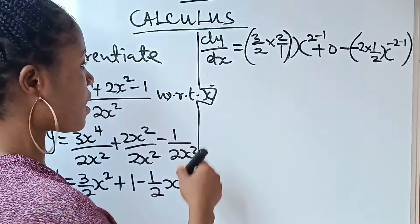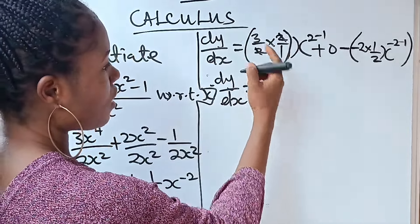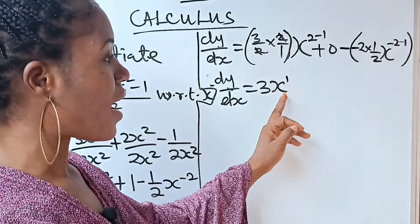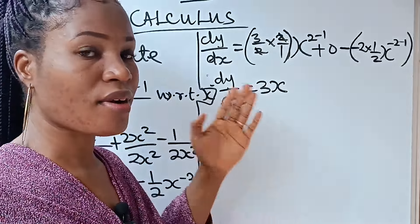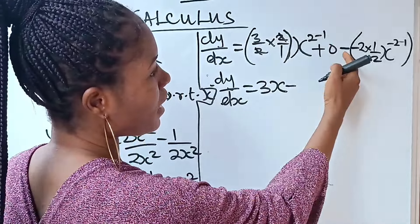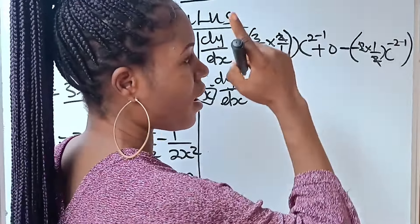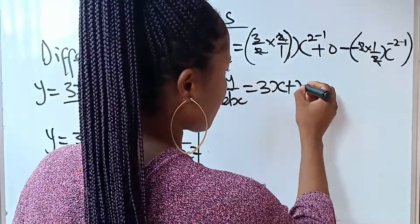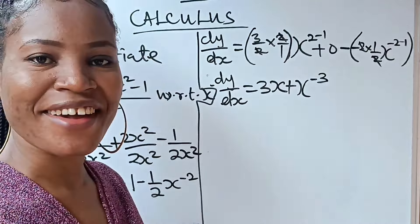We now go ahead and simplify. dy/dx equals: the 2s cancel to leave 3, and 2 minus 1 gives x to the power of 1, which is just 3x. Then, minus times minus gives plus, the 2s cancel to leave 1, and the power becomes minus 2 minus 1 equals minus 3. So the final answer is dy/dx = 3x + x to the power of minus 3.